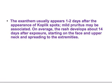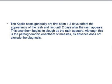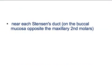The rash starts from the pre-auricular region and spreads cephalocaudally — from the face and neck to the torso and extremities. Although Koplik's spots are pathognomonic for measles, their absence does not exclude the diagnosis. If you see Koplik's spots, the diagnosis is confirmed, but their absence does not rule out measles.